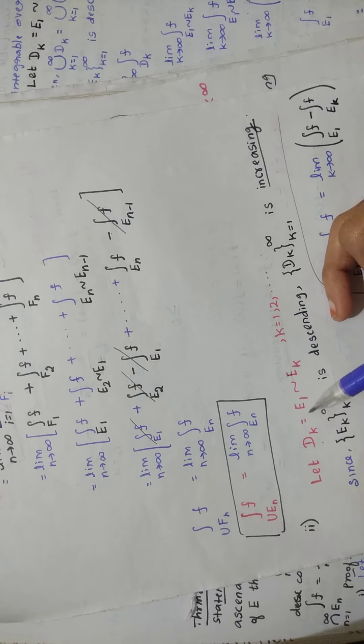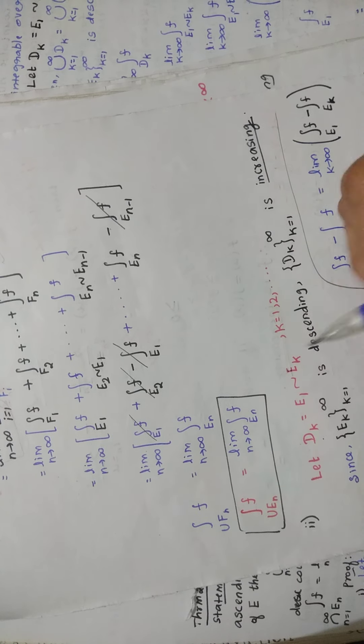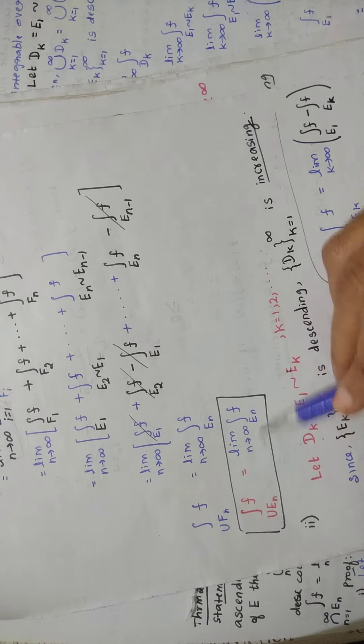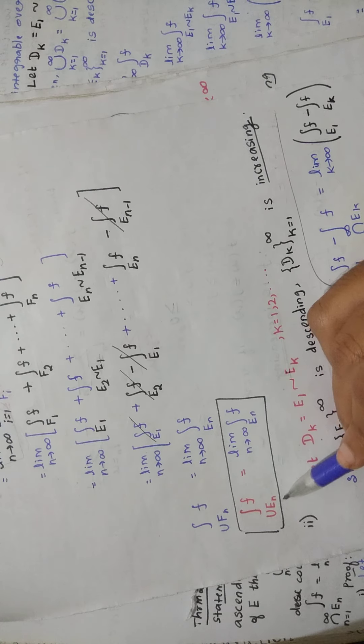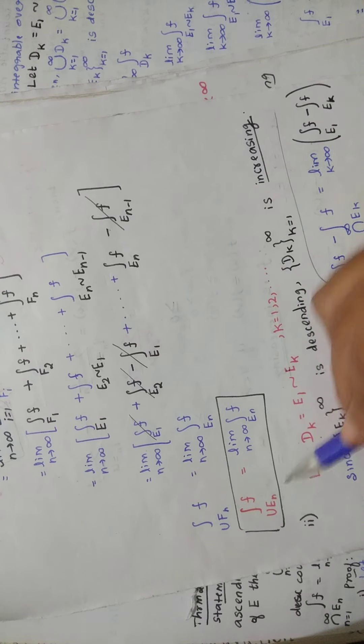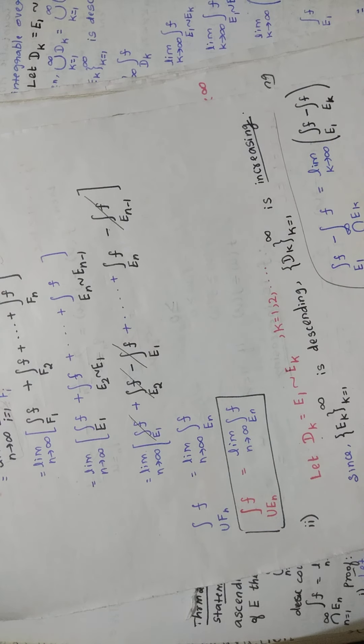After cancellation, you are left with the remaining term. On the left-hand side, in place of union Fn you can put union En. So this is what the statement asks us to prove — and you have proved it.